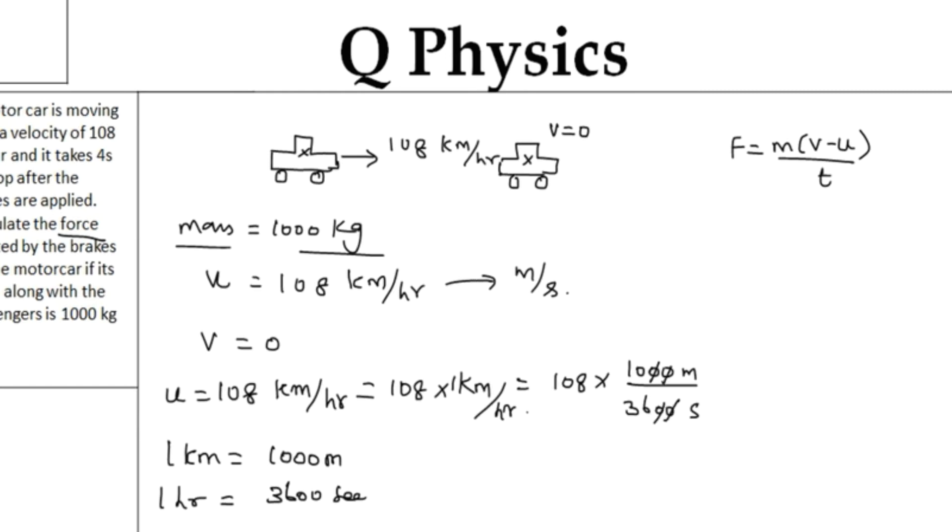If I cancel two zeros and two zeros, this becomes 5, this becomes 18. After this, if I try to cancel 18 and 108, I am going to get 6 times. The value I am getting is 30 meter per second. So 108 kilometer per hour equals 30 meter per second.